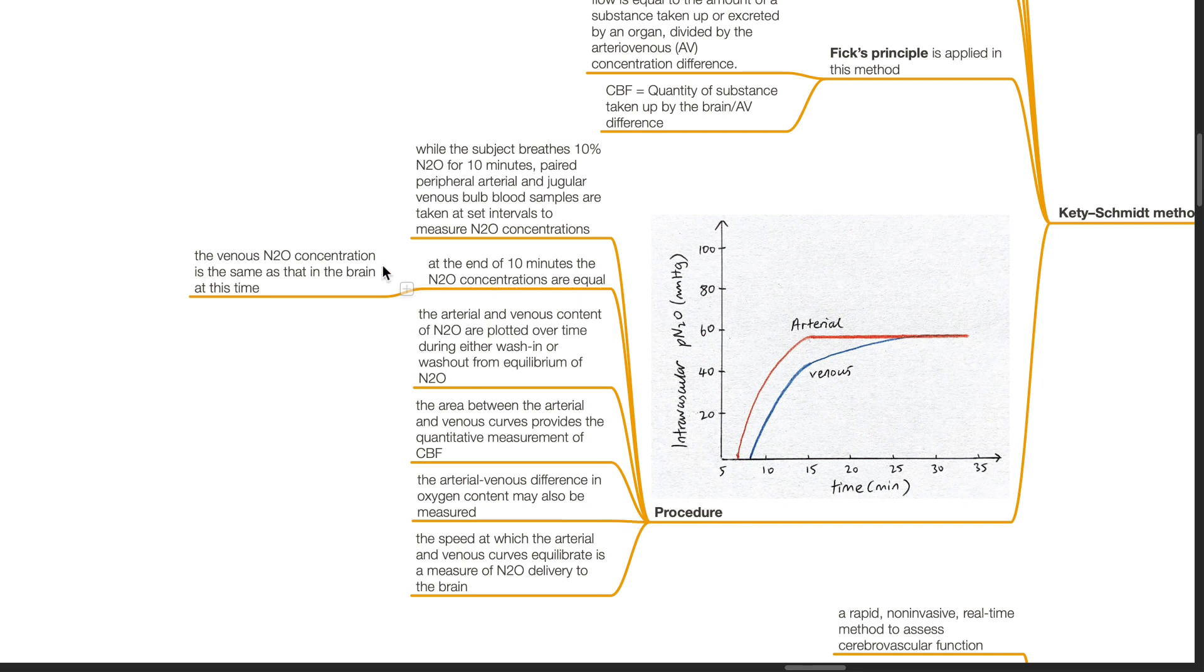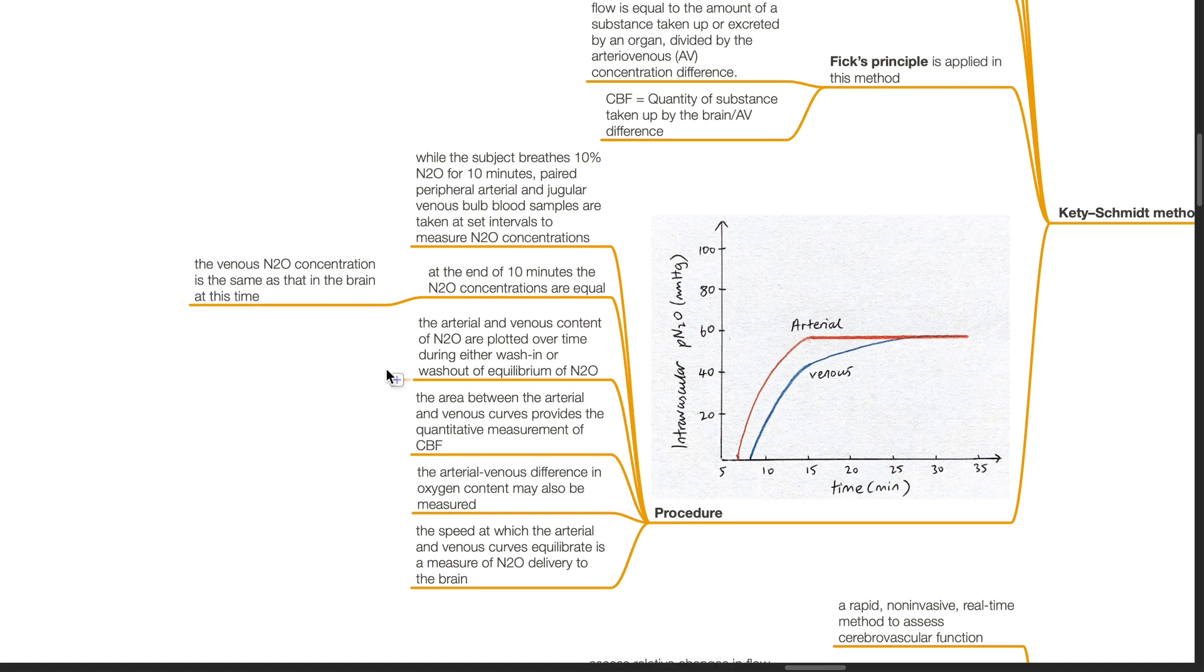The venous nitrous oxide concentration is the same as that in the brain at this time. The arterial and venous content of nitrous oxide are plotted over time during either wash-in or wash-out of equilibrium of nitrous oxide. The area between the arterial and venous curves provides the quantitative measurement of CBF. The arterial-venous difference in oxygen content may also be measured. The speed at which the arterial and venous curves equilibrate is a measure of nitrous oxide delivery to the brain.